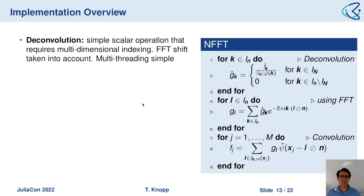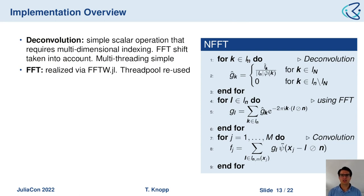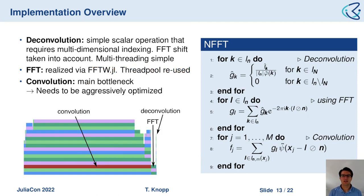Now let's jump into the implementation. It starts with the deconvolution, which is a simple scale operation — we include the FFT shift and take this into account in our implementation. Multi-threading here is very simple: just multi-thread this for loop and you're basically done. Then we implement the FFT step using the FFTW package, which has support for the Julia thread pool.